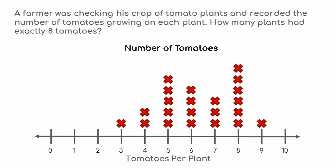A farmer was checking his crop of tomato plants and recorded the number of tomatoes growing on each plant. How many plants had exactly eight tomatoes? There is one X for each tomato plant. The X goes above the number on the number line that shows how many tomatoes were on the plant. For example, there was one plant that had three tomatoes and two plants that had four tomatoes. The key word in this problem is exactly.